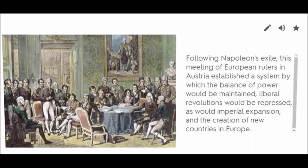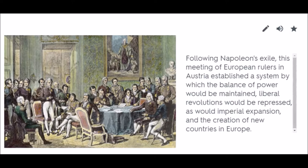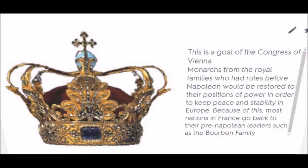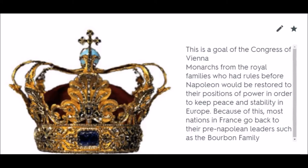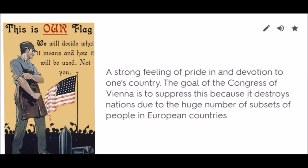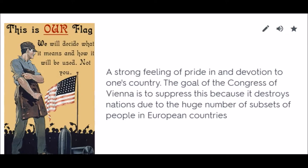Congress of Vienna: Following Napoleon's exile, this meeting of European rulers in Austria established a system by which the balance of power would be maintained, liberal revolutions would be repressed, as would imperial expansion and the creation of new countries in Europe. Nationalism: A strong feeling of pride and devotion to one's country. The goal of the Congress of Vienna is to suppress this because it destroys nations due to the huge number of subsets of people in European countries.